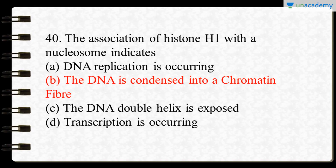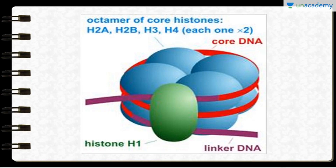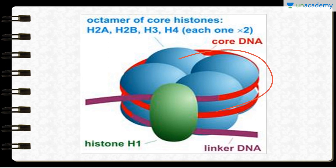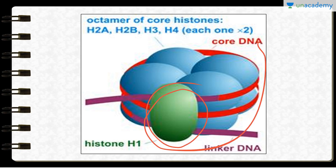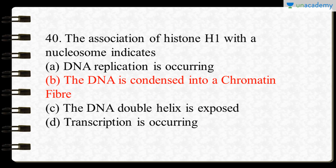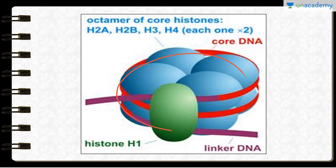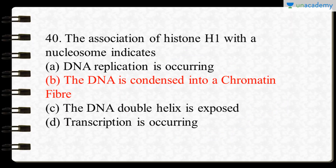The final question: association of histone H1 with nucleosome indicates what? The association of histone H1 protein indicates the complete formation of the nucleosome. Histone H1 interacts with the linker DNA and provides the ability for DNA to be in a condensed form, meaning the DNA is condensed into a chromatin fiber. Option B is the correct answer.